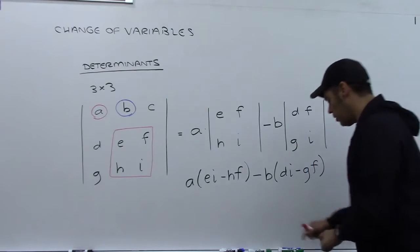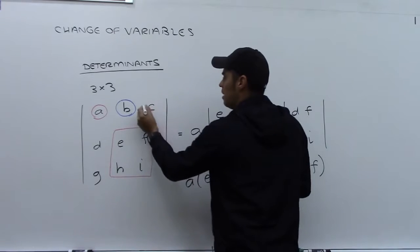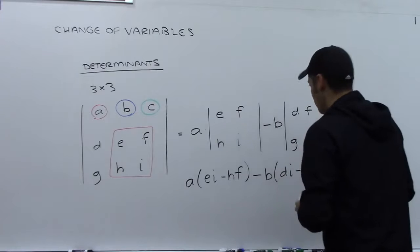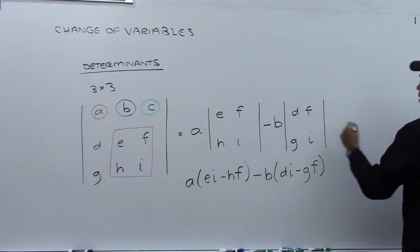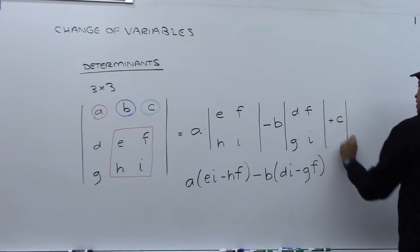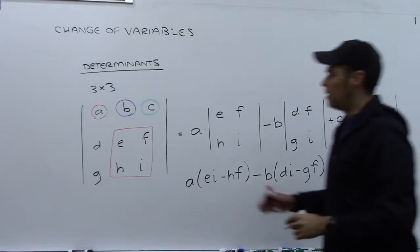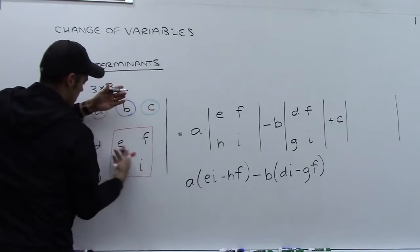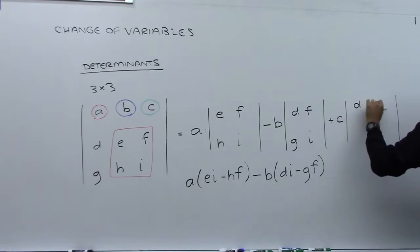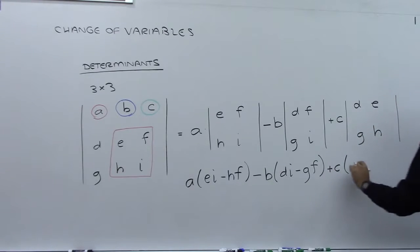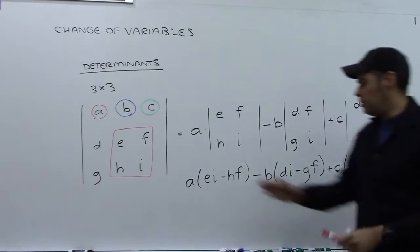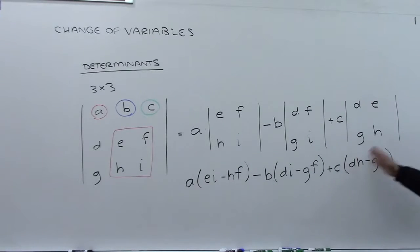Then we continue with one more term. We have positive A, negative B, positive C — so we're alternating signs. For C, we cover up this column and row, and we're left with DEGH. So we get plus C times (DH minus GE). You could then multiply A, negative B, and C through their respective determinants, and that gives you the full determinant. That's how you compute a 3×3 determinant.